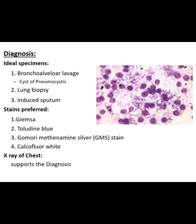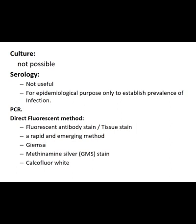For diagnosis: specimens include bronchoalveolar lavage showing cysts, lung biopsy, or induced sputum. Stains used are Giemsa stain, toluidine blue stain, Gomori methenamine silver stain, and calcofluor white stain. Chest X-ray also helps in diagnosis. Culture is not done — not possible. Serology is not useful. PCR is done.